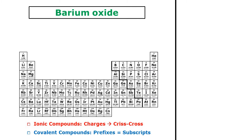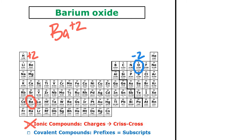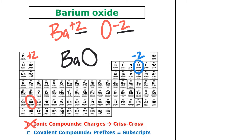Next we have barium oxide. Barium is a metal and oxide is the name of oxygen's negative ion, so I can see that I'm looking at an ionic compound — I need to find their charges and then do the crisscross method. Barium is in group 2, so it has a charge of +2. Oxygen is in group 16, so it has a −2 charge. Plus two and minus two cancel, so I only need one of each — no crisscross needed. The formula for barium oxide is BaO.